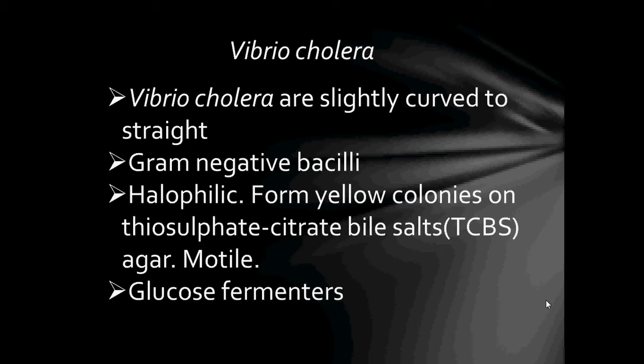Vibrio cholerae are slightly curved to straight. They are gram-negative bacilli and are halophilic — halophilic meaning salt loving. They form yellow colonies on thiosulfate citrate bile salts agar, TCBS agar, and are motile.